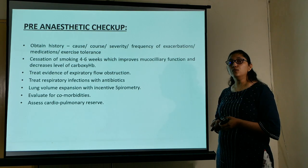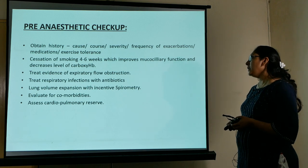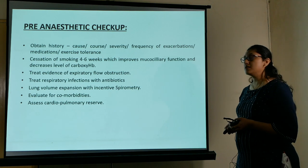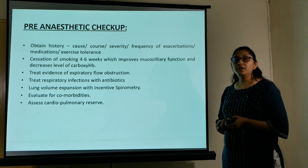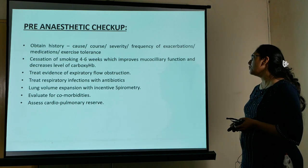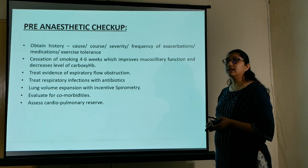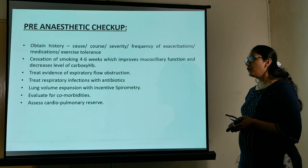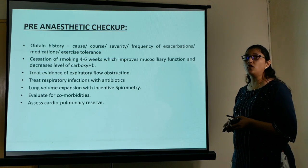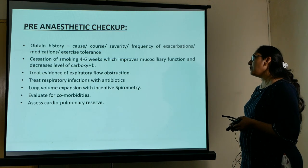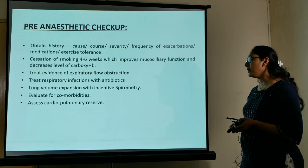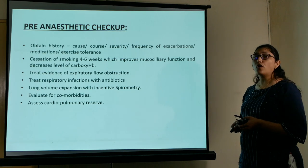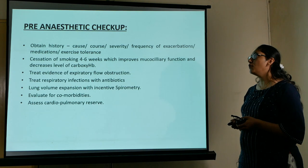We advise cessation of smoking first of all, and for elective surgery it is better to provide a smoking cessation period of around 4 to 6 weeks, which improves mucociliary function and decreases the level of carboxyhemoglobin. We must treat evidence of expiratory flow obstruction using bronchodilators, nebulization, and lung volume expansion with incentive spirometry. We should also assess the patient for associated features of cor pulmonale, which is present in patients with prolonged COPD.